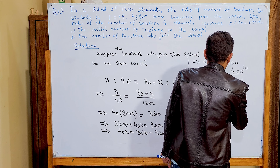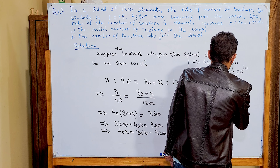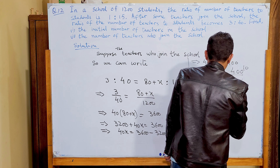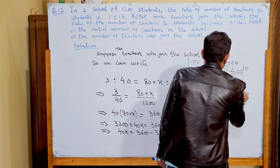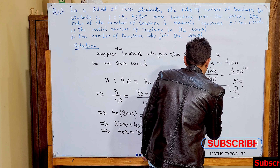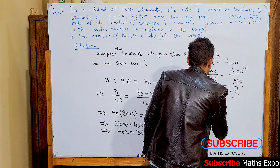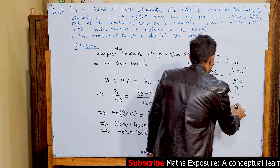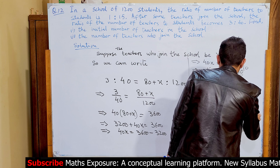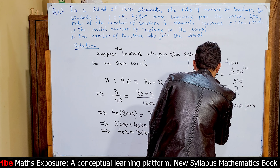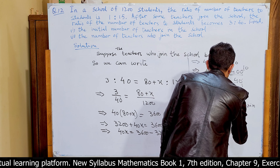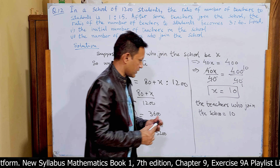x = 10. The number of teachers who joined the school is equal to 10. This is the answer to Part 2.